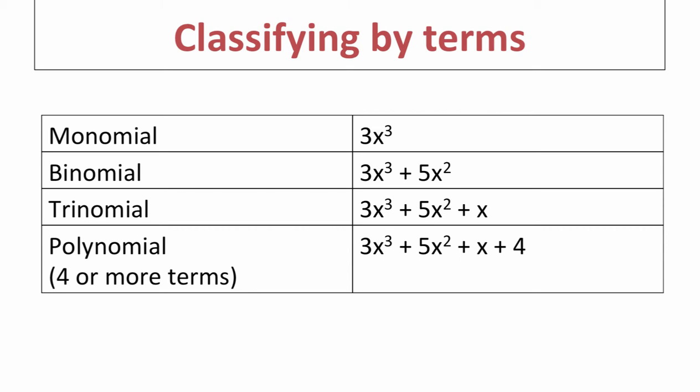3x to the third plus 5x squared is considered a binomial because there are two terms separated by an addition sign — the prefix 'bi' means two. A trinomial contains three terms — think of triangle, tricycle, or triceratops. So 3x to the third plus 5x squared plus x contains three terms separated by two addition signs. Anything bigger than that we typically call a polynomial.